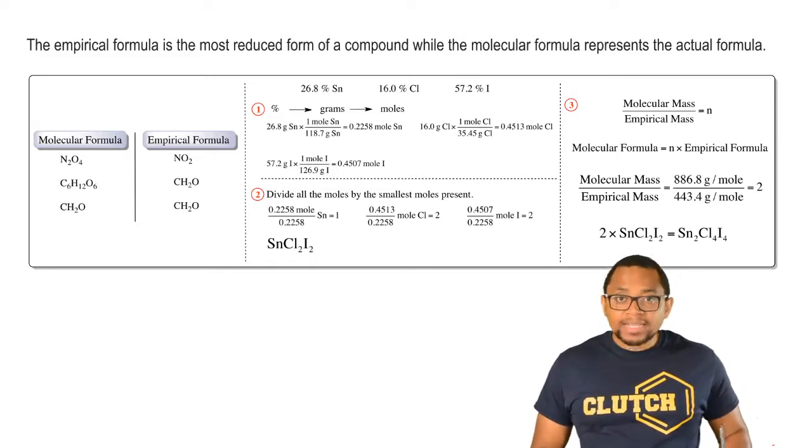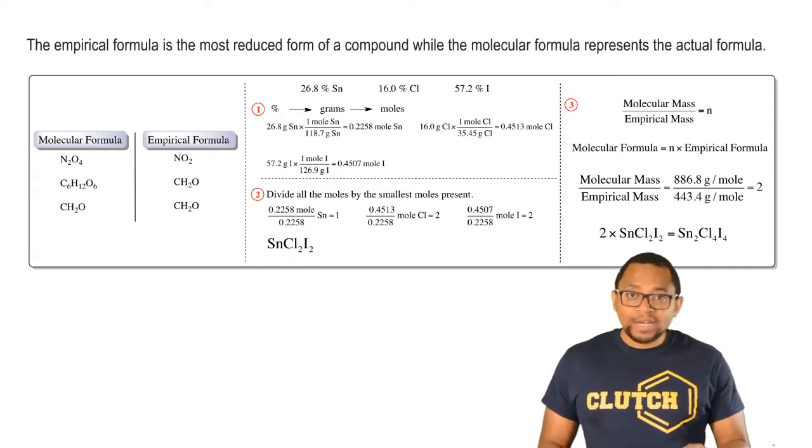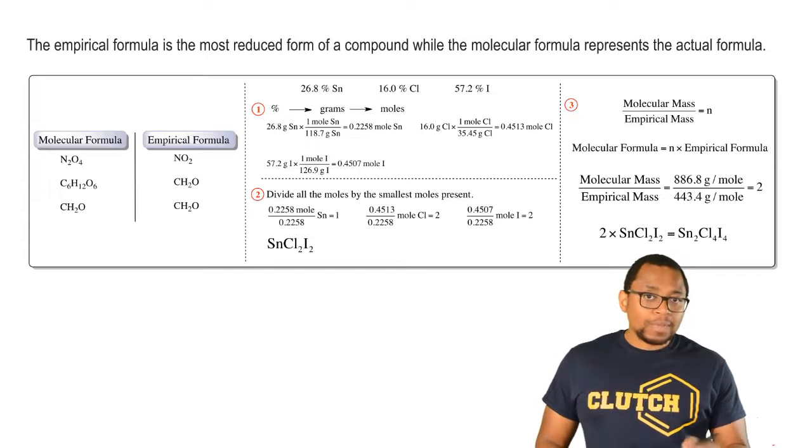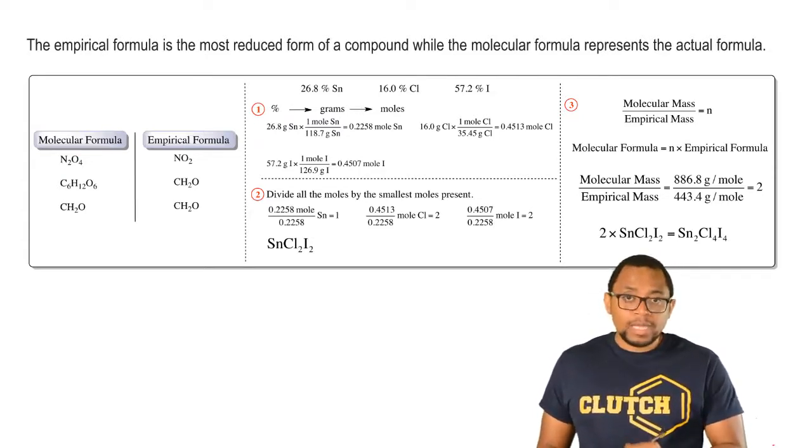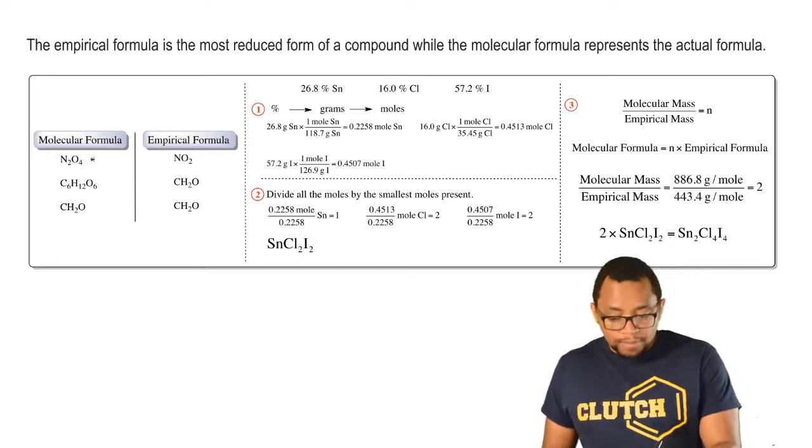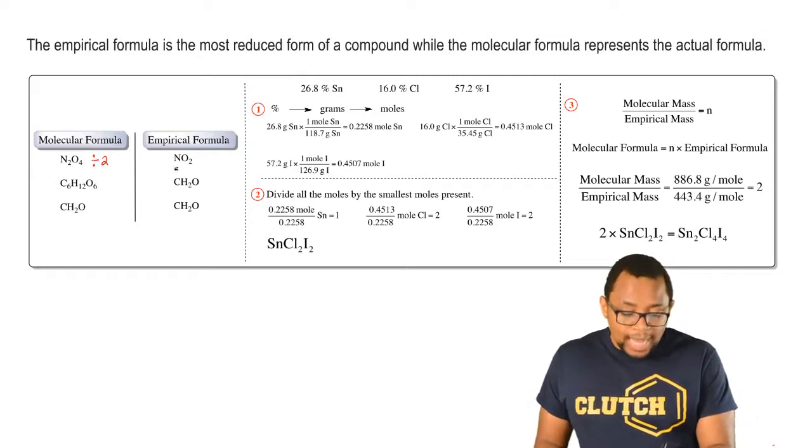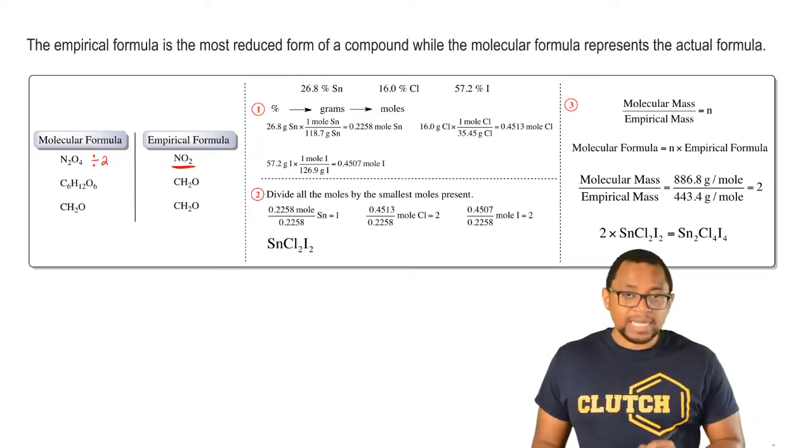If we're comparing them side by side, the molecular formula represents the actual formula of your compound. Here we have N2O4. The empirical formula is the reduced form. Both 2 and 4 are divisible by 2, so when you divide them both by 2, we get NO2, which represents the empirical formula.